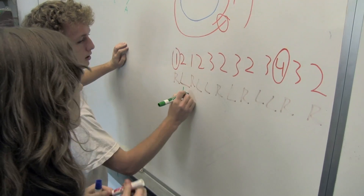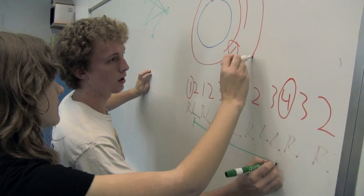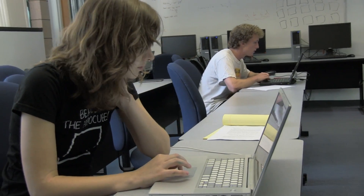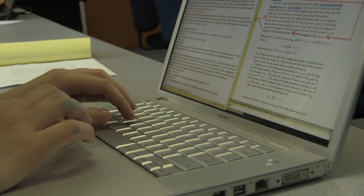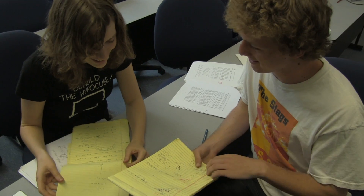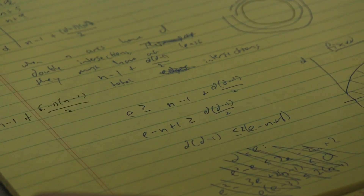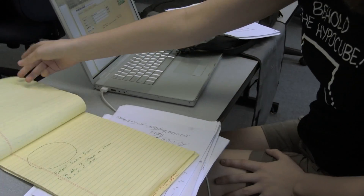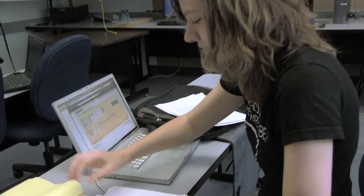We started off with a question: can you find this bound for one number based on knowing another number? For a while we just sat down, wrote, and talked to each other a lot, trying a lot of different ideas for how to answer this question and how to figure out certain quantities related to it — how to count things.